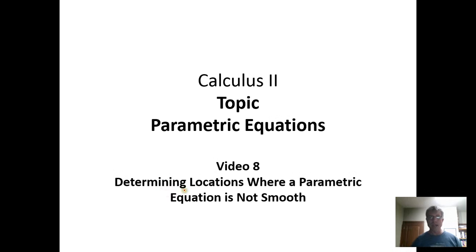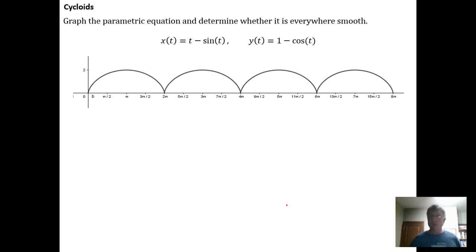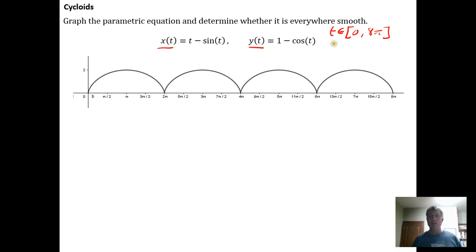In this video we're going to look at how to determine locations on a parametrically defined curve where it's not smooth. Here I have parametric equations of a cycloid, and I've graphed this cycloid using GeoGebra on the interval from 0 to 8π. The cycloid is defined for all real numbers, so t could run from negative infinity to infinity.